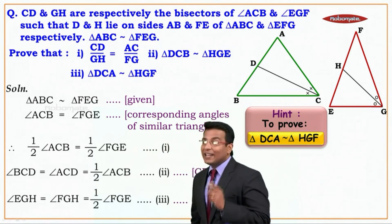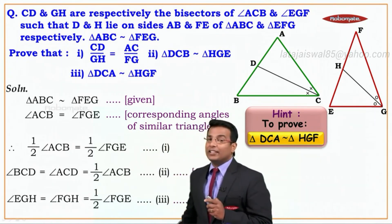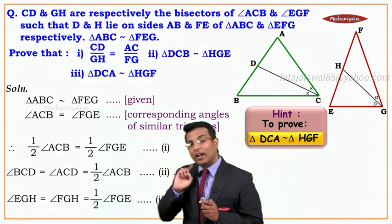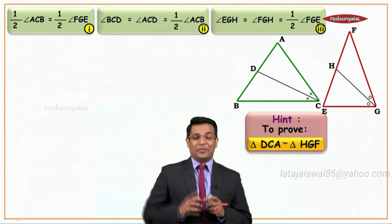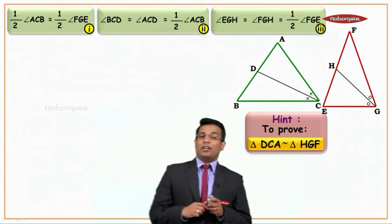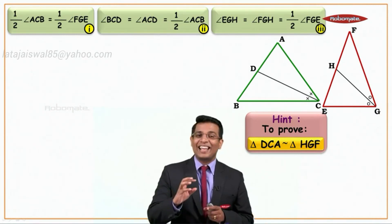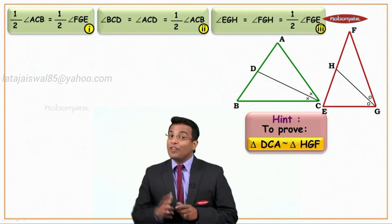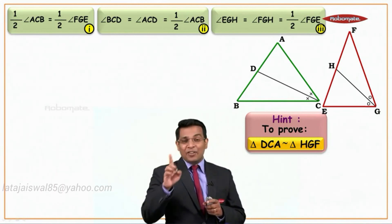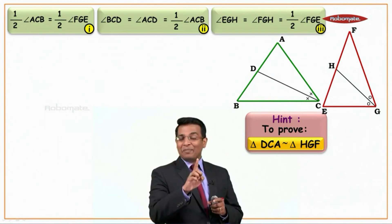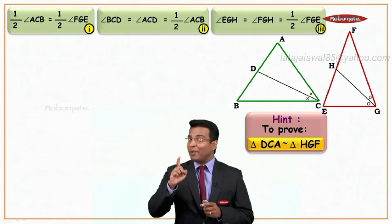All three statements together are going to help us prove that triangle DCA is similar to triangle HGF. I have given you the three statements, and I know that you can do it. Now I want you to try it on your own.